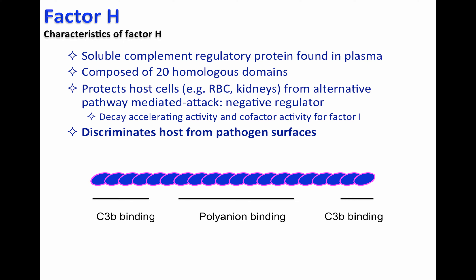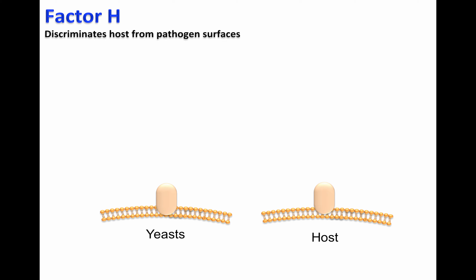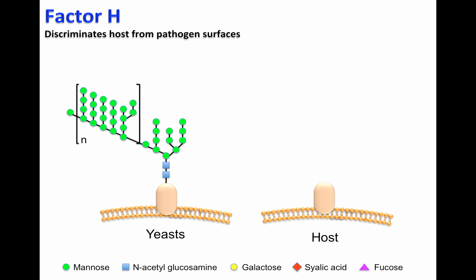Factor H is very important because it is able to discriminate host from pathogen surfaces. Pathogens express different polyanions or carbohydrates on the cell surface compared with the polyanions found on host cells, like sialic acid. Factor H will be able to bind and recognize the host cells but not the pathogen because they express different polyanions.